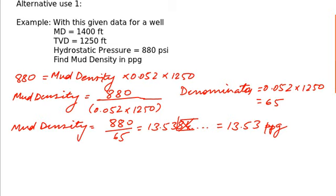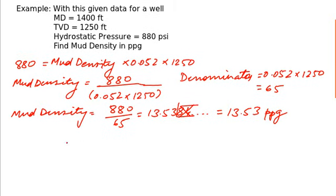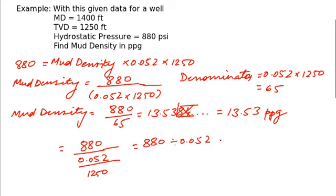This is by using the usual approach. Now I will tell you how to do the same calculation with calculator more easily. This calculation is equivalently 880 divided by 0.052, and then this quantity is being divided by 1250. This is same as what we have done above. So you can calculate it by 880 divided by 0.052 and then dividing again by 1250.